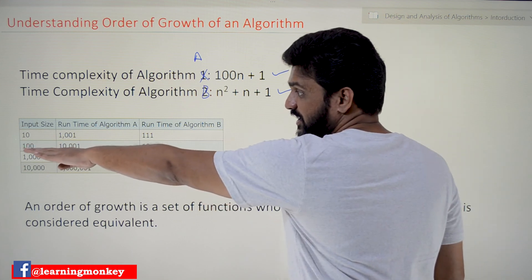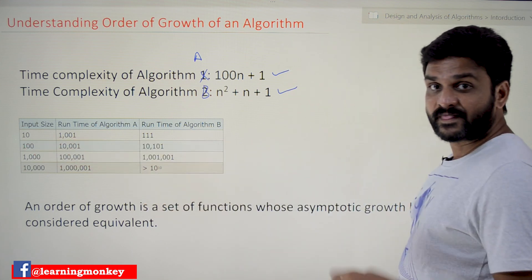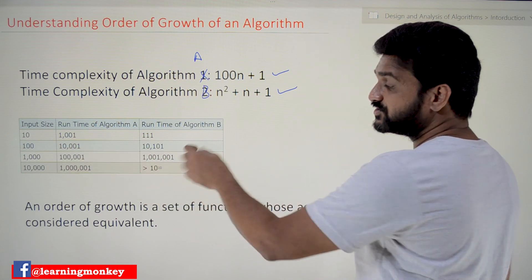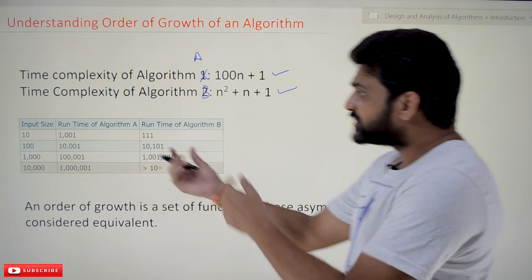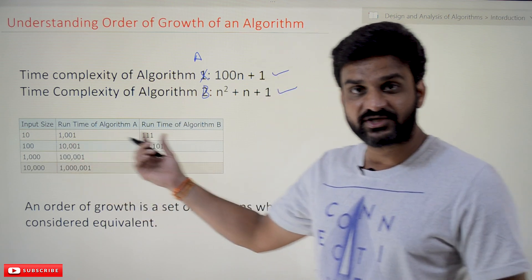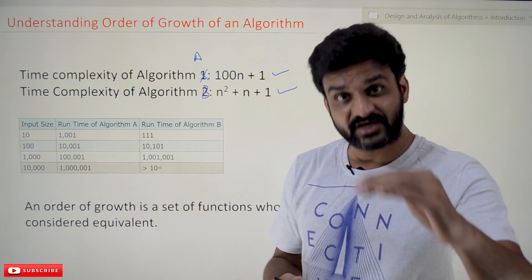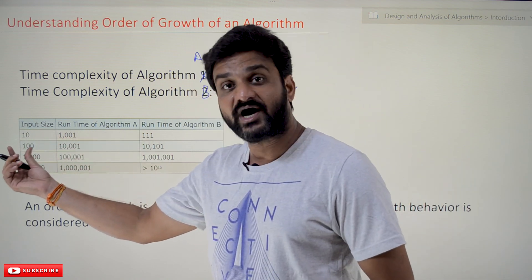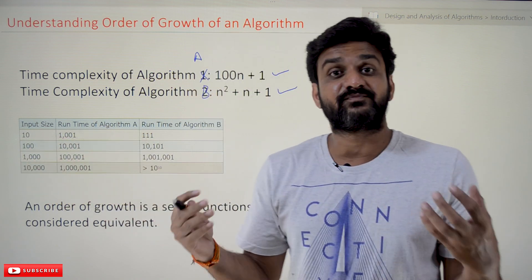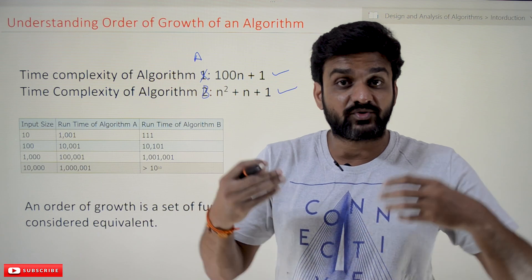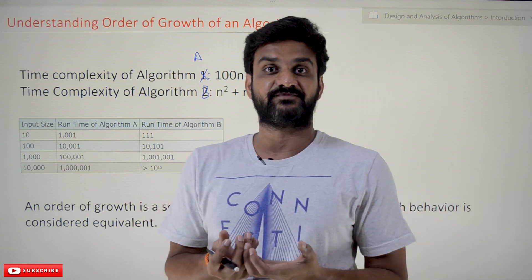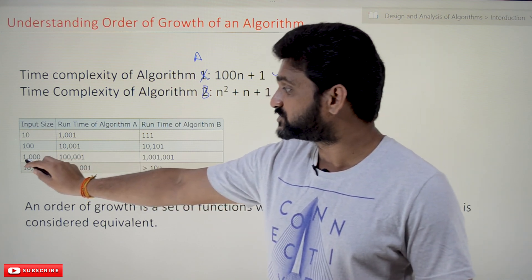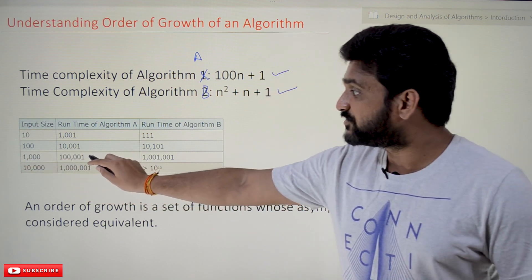If you consider the input size as 100, the run time of algorithm A and algorithm B are very close — both algorithms are executing nearly the same number of steps. So for an input size of 100, both of them are executing approximately the same number of steps. If you consider the input size as 1000, the run time of algorithm A is this value.